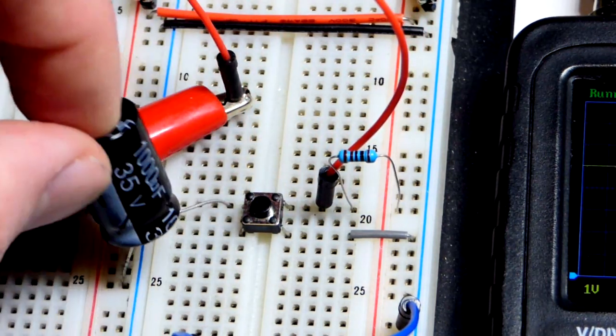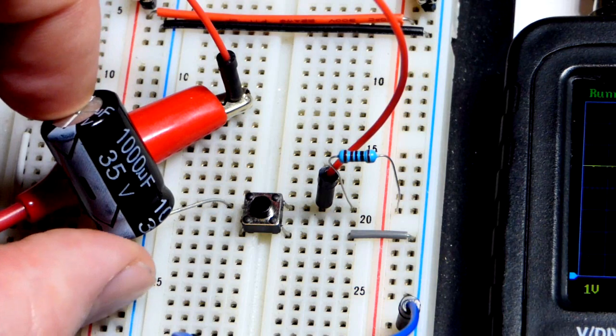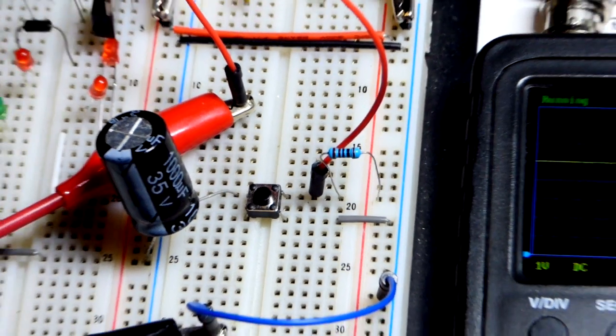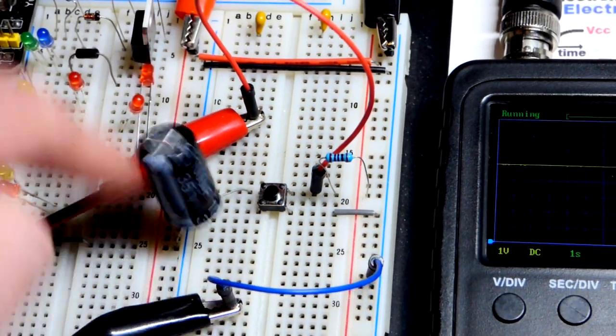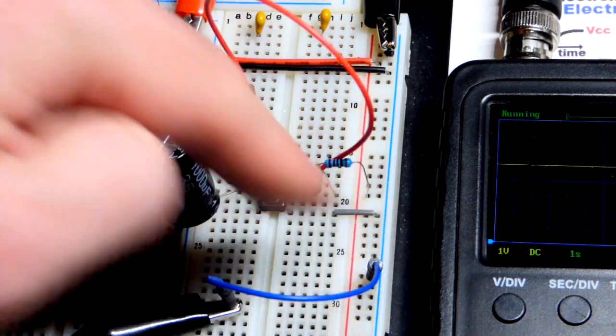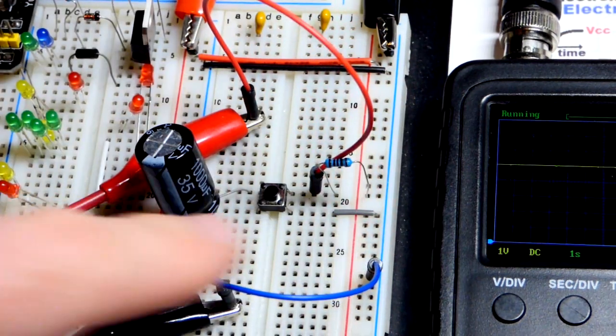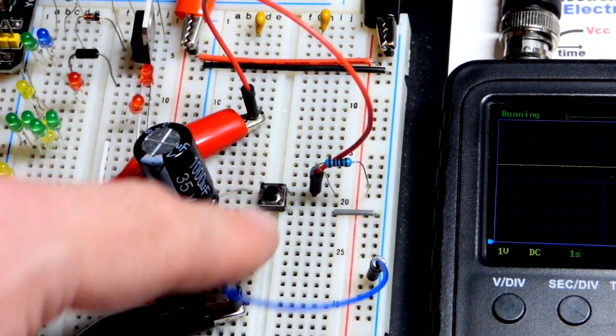The negative side, the left side of the board, is a direct connection thanks to that jumper there to the negative side over there, so we're directly connected.